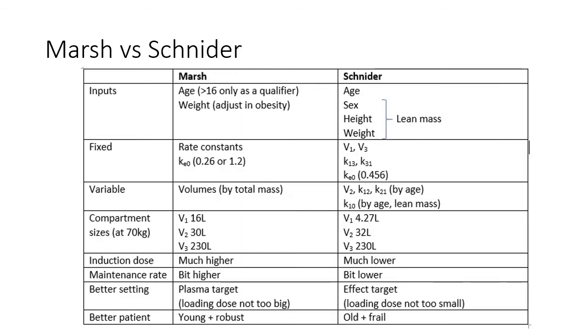I've listed here the differences between Marsh and Schneider models for TCI. The most important differences in my opinion are as follows. Firstly, the inputs. Whereas the Marsh model requests the patient's weight, the Schneider model estimates lean mass based on sex, height, and weight. This means that when using the Marsh model in obese patients, it is essential to adjust for said obesity when entering the weight.